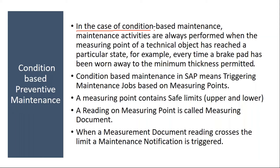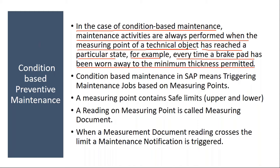In the case of condition-based maintenance, maintenance activities are always performed when the measuring point of a technical object — technical object is nothing but equipment — has reached a particular state. For example, every time a brake pad has been worn away to the minimum thickness permitted, condition-based maintenance is performed when the condition of the technical object reaches a certain state which is not allowed.